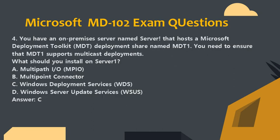Question 4. You have an on-premises server named Server 1 that hosts a Microsoft Deployment Toolkit (MDT) Deployment Share named MDT1. You need to ensure that MDT1 supports multicast deployments. What should you install on Server 1? A. Multipath I/O (MPIO). B. Multipoint Connector. C. Windows Deployment Services (WDS). D. Windows Server Update Services (WSUS). Answer: C.